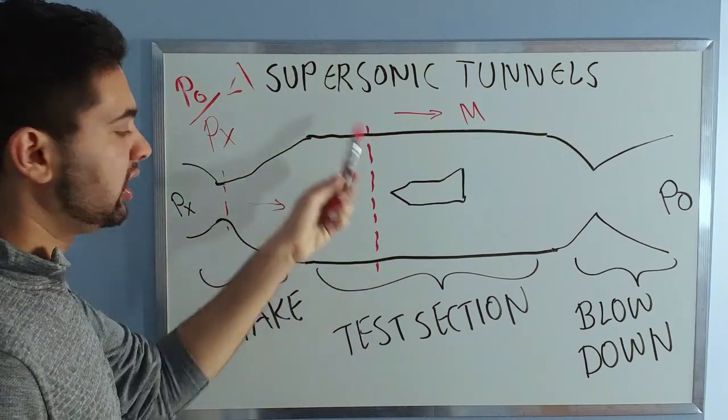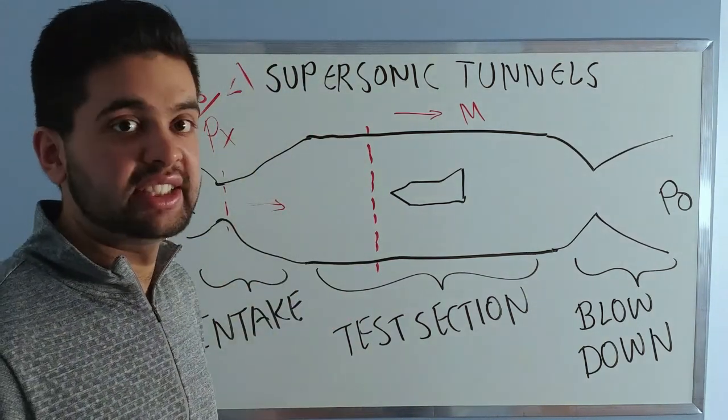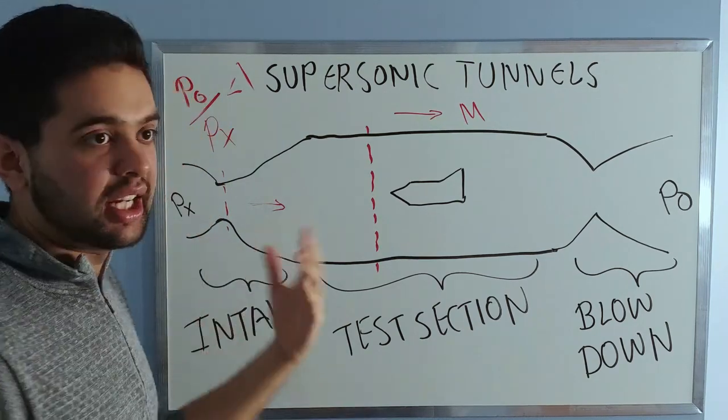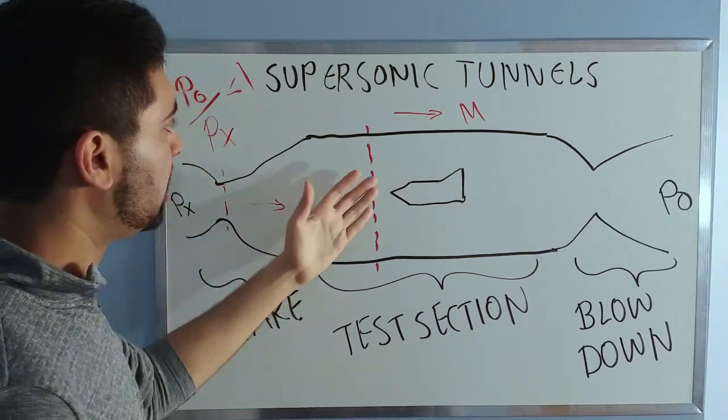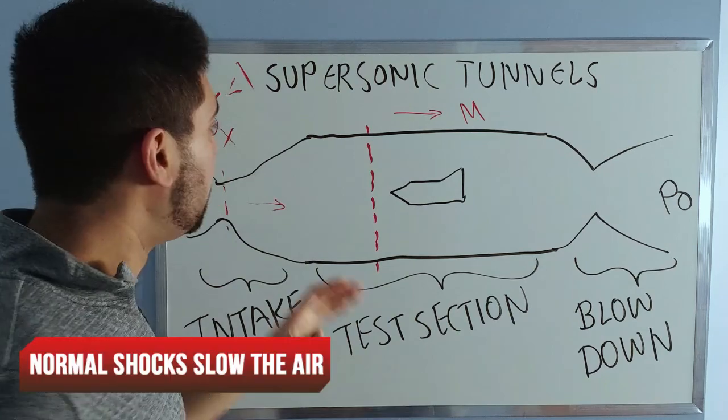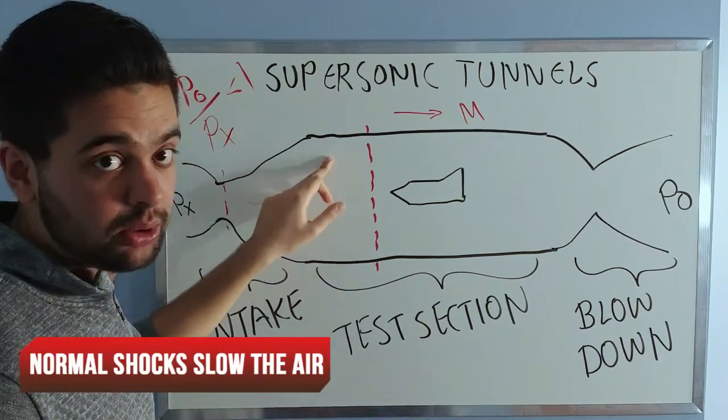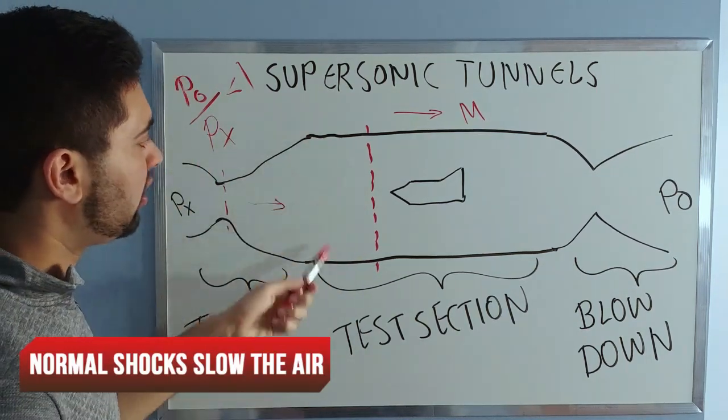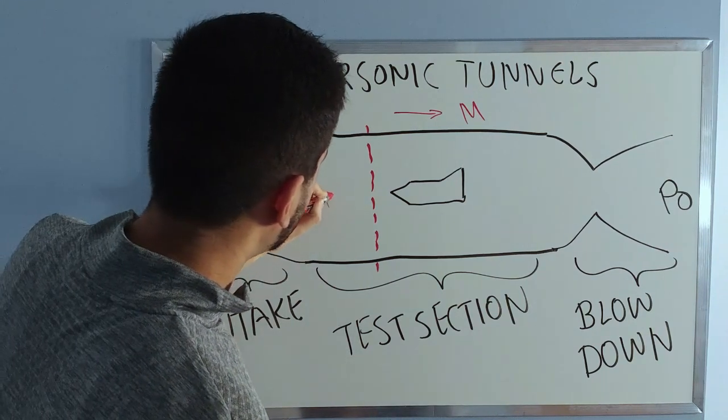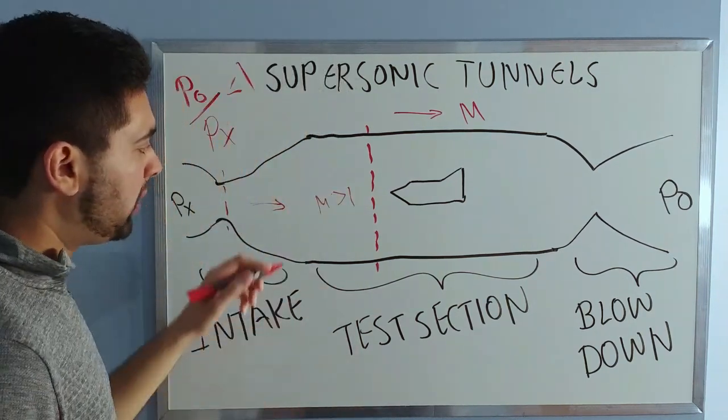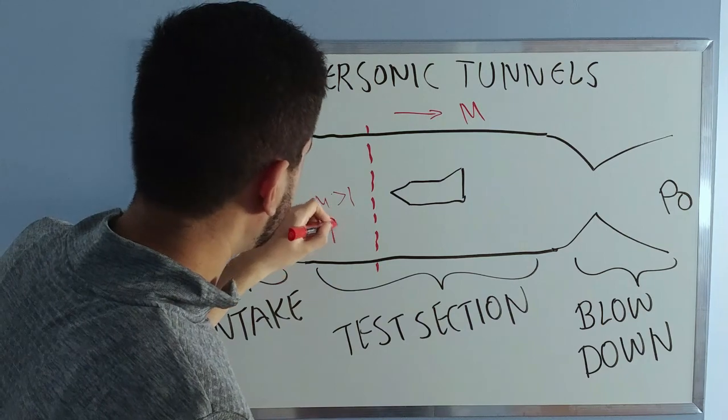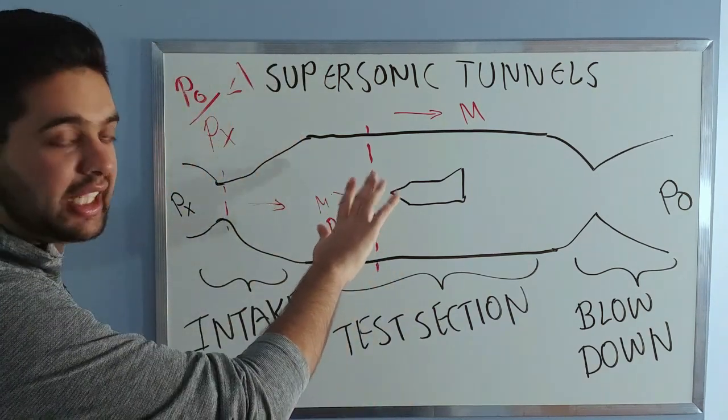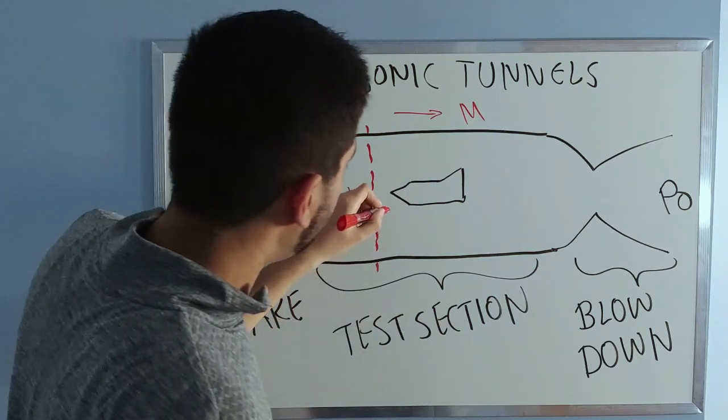When you have a normal shock over here, that is when you have the worst case scenario, and they design wind tunnels to withstand pressures which are here. Here you will have supersonic flow. Your Mach number in this area will be more than one, and your pressure will be some value p1. When you go past this normal shock your Mach number will be subsonic.